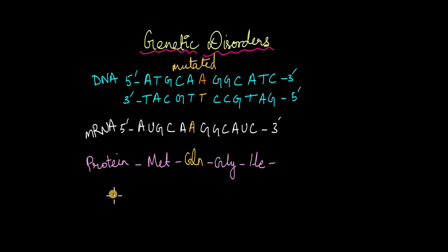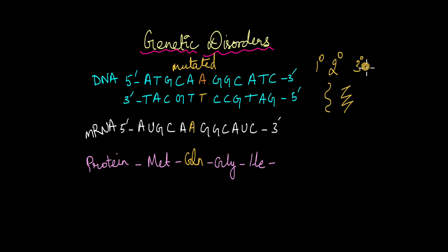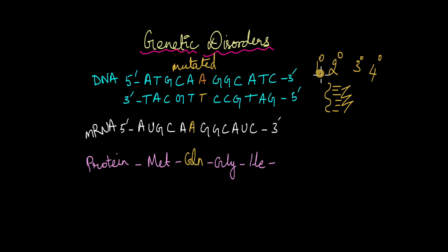If you remember from the biomolecules chapter, we learnt that proteins have specific structures. You have the primary structure which is the amino acid sequence, then the secondary structure which is when the proteins fold upon one another forming helices or beta sheets, and then you have the tertiary structure where two or more of the secondary structures interact with one another, and then you have the quaternary structure as well. We also learnt that the structure of the protein is very important for its function. Changing one amino acid for another because of a mutation can affect these structures.